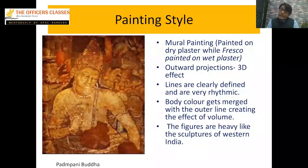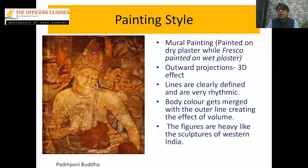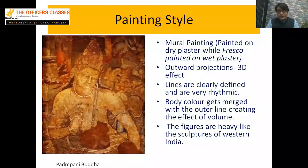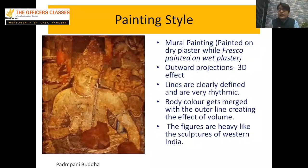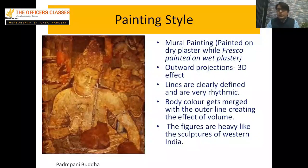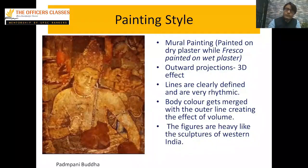A key feature of these paintings is the 3D effect — a 3D projection where the body color merges with outer lines creating the effect of volume and outward projection. There are no geometrical, clear-cut defined lines; instead there are rhythmic, lyrical lines. You can see sharp lines and figures that are heavy, like the sculpture style of Western India. These are the unique points of these paintings.